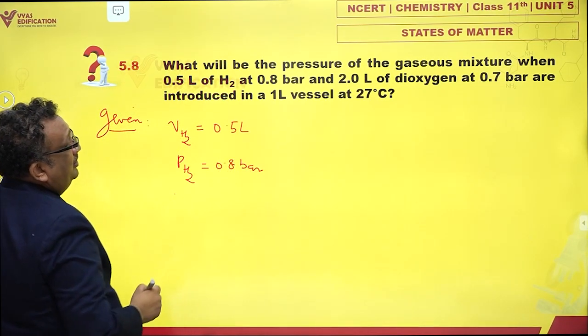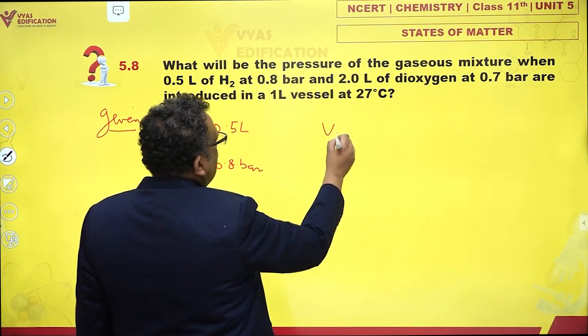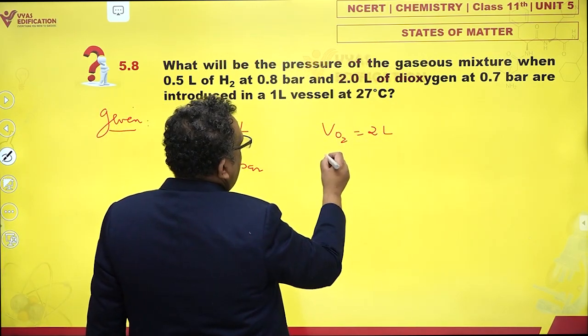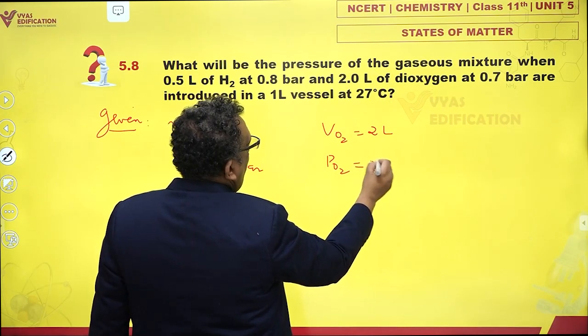Volume of oxygen is 2 liters and pressure of oxygen is 0.7 bar.